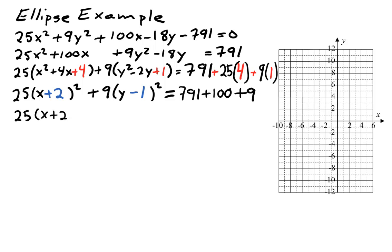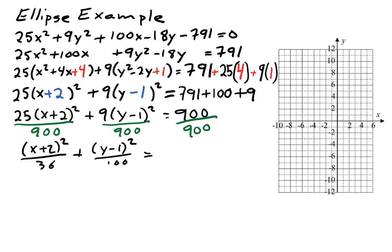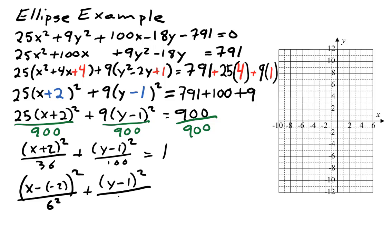This gives 25 times x plus 2 squared plus 9 times y minus 1 squared equals 791 plus 100 plus 9, which adds up to 900. We divide everything through by 900 and reduce: x plus 2 quantity squared over 36, plus y minus 1 quantity squared over 100, equals 1. For standard form, we write x minus negative 2 quantity squared, and y minus 1 is already a subtraction. The denominators become squares: 36 is 6 squared and 100 is 10 squared.